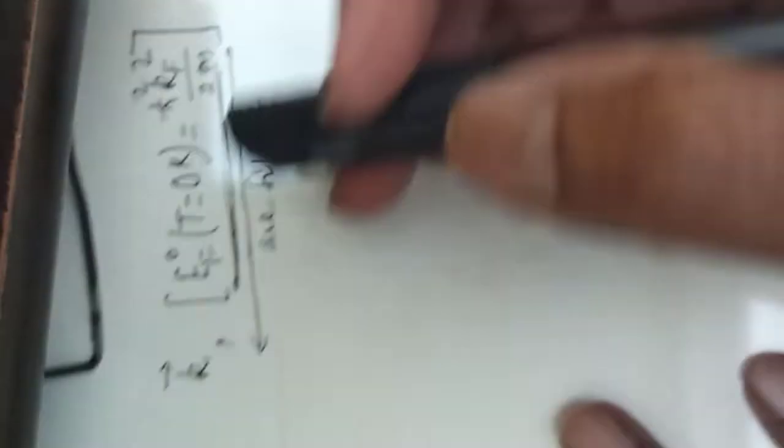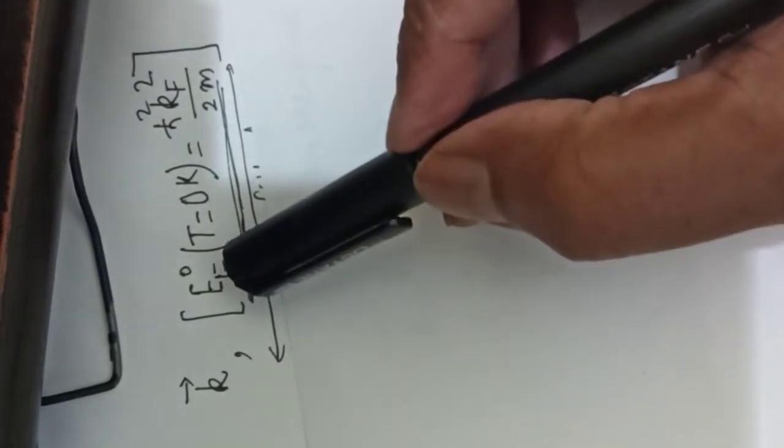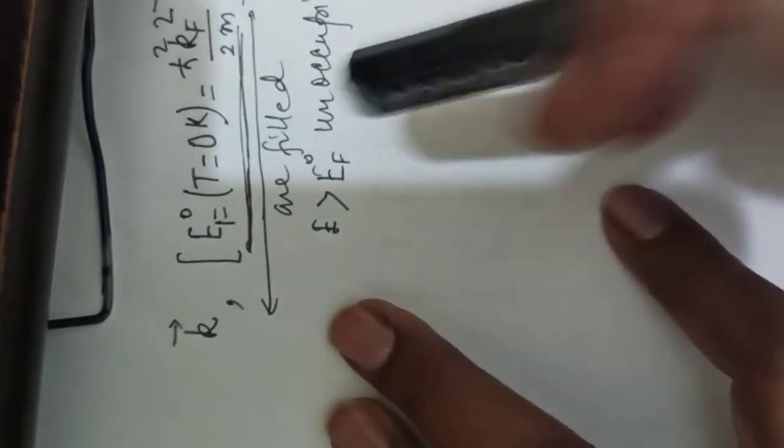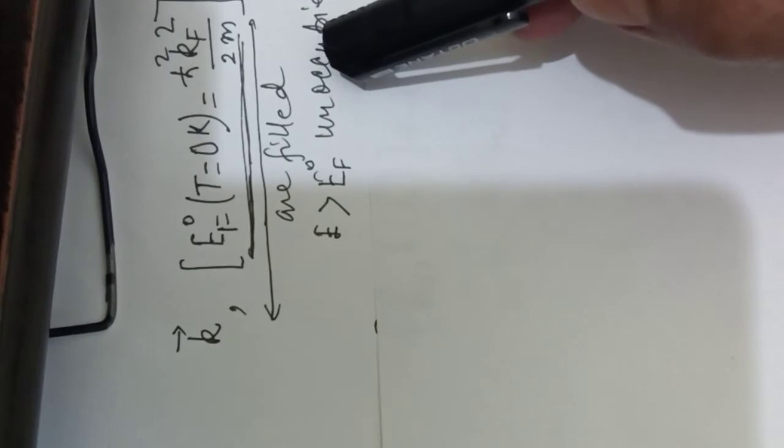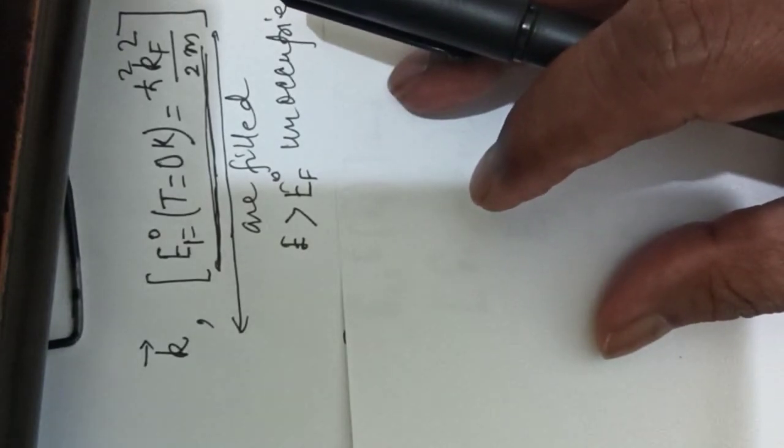Now the ground state of non-interacting Fermi gas of electrons in a potential well corresponds to the situation where all electron states with wave vector k within the Fermi sphere EF0 at T = 0 are completely occupied, and all states outside of the Fermi sphere are completely unoccupied.